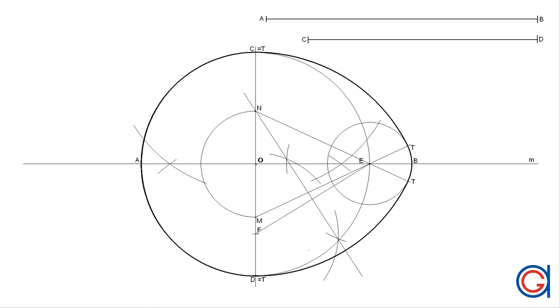Finally, we mark our four tangent points with the capital letter T, as shown here in the video. Here we have the ovoid, given its minor and major axis. I hope this video has helped you. Bye-bye.